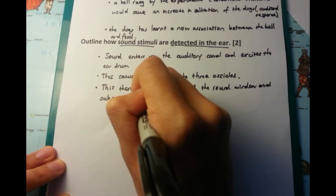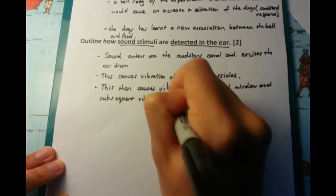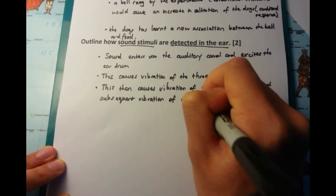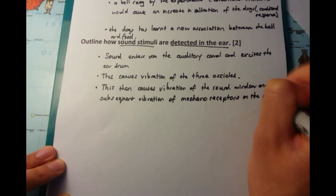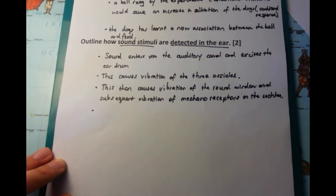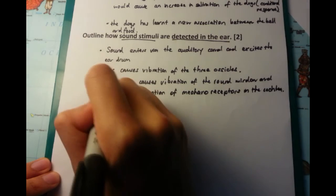You have the vibration of the round window and the fluid within the cochlea. And once you have the vibration of the fluid in the cochlea, you have excitation of the mechanoreceptors which are there as well. And this is ultimately what causes hearing.